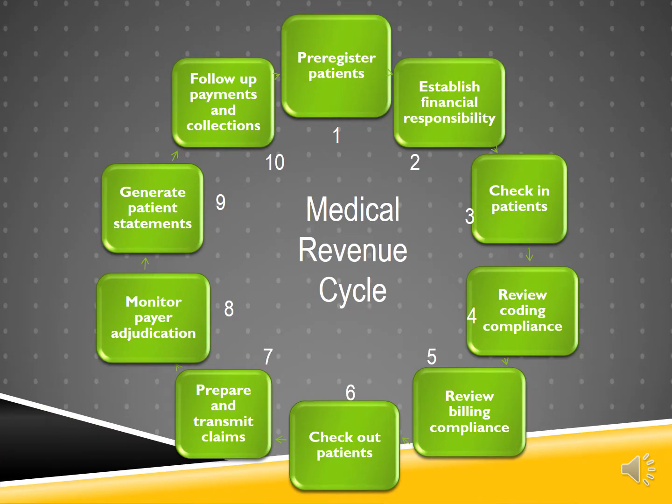Let's start by looking at the entire medical revenue cycle, from the first point of contact from a patient to receiving payment. The revenue cycle starts when a patient calls to set up an appointment. Basic information is obtained and entered into an electronic practice management program, such as Harris Care Tracker. Typically the patient is scheduled for an appointment in Step 1. Step 2 is to establish financial responsibility.